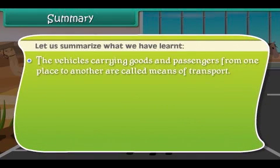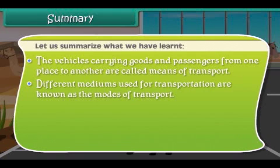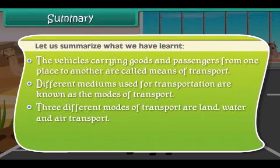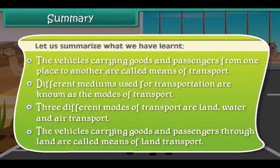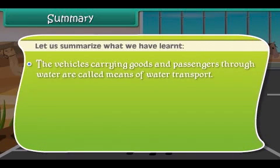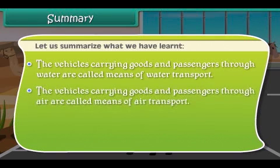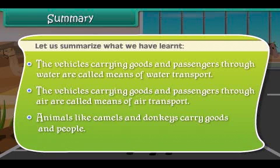The vehicles carrying goods and passengers from one place to another are called means of transport. Different mediums used for transportation are known as the modes of transport. Three different modes of transport are land, water and air transport. The vehicles carrying goods and passengers through land, water, or air are called means of land, water, and air transport respectively.